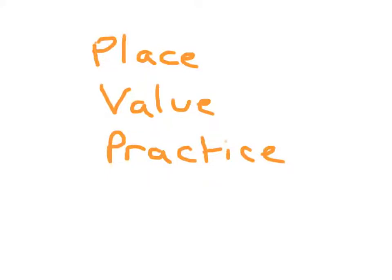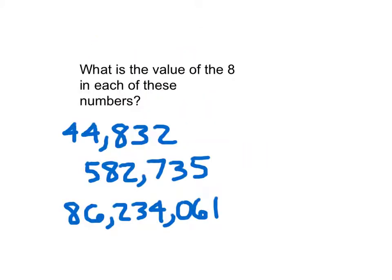Practice with place value. The question here asks what the value of the 8 is in each of these numbers. This first number, 44,832. The value of the 8 would be 800.